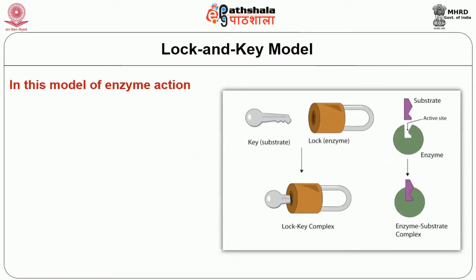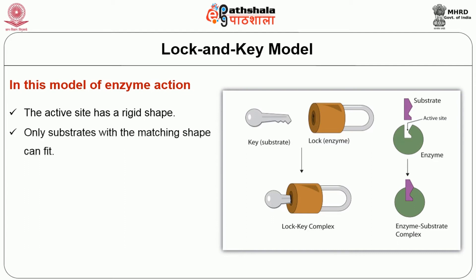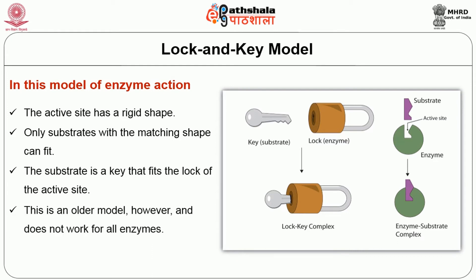In the lock and key model, the active site of an enzyme has a very rigid shape — assumed to be a lock. To open the lock you need a key, and the key is the substrate molecule, which must be of a specific shape. For a particular enzyme (the lock) there must be a specific substrate (the key), and only when the correct key binds does the enzyme-substrate complex form. This is an older model and does not explain the mechanism of action of most enzymes.